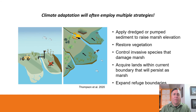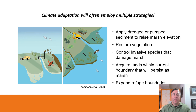Climate adaptation will often employ multiple types of strategies. At Blackwater National Wildlife Refuge, dredged silt and sand were used to build up an area of marsh that was disappearing from sea level rise. Marsh grasses were planted and invasive nutria removed. The refuge is also acquiring forest and farmland at adjacent higher elevations where the marsh can migrate over time and continue to provide marsh bird habitat and other benefits. There's often overlap between adaptation and mitigation — for example, saving and restoring coastal marsh also sequesters carbon in the form of peat.